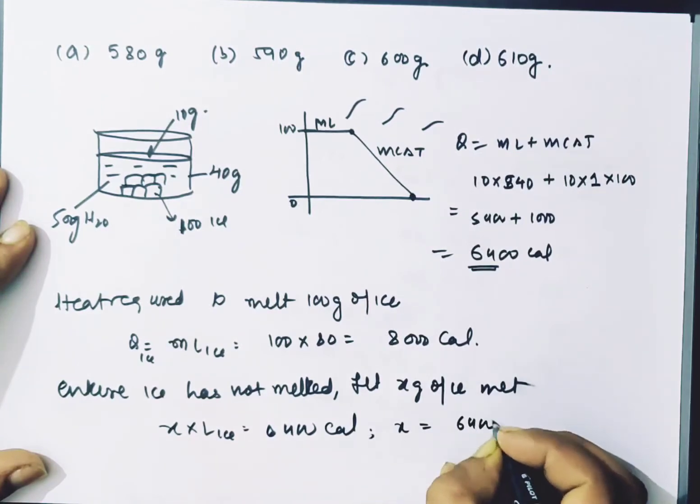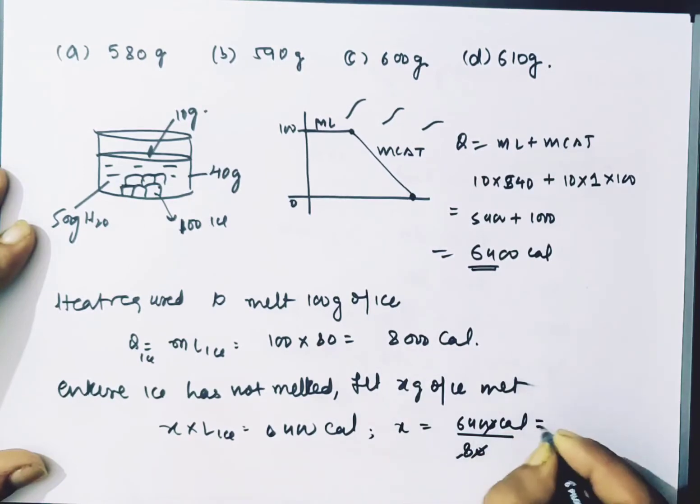So we have 6400 divided by L of ice, which is 80, equals 80 grams of ice melted in the mixture.